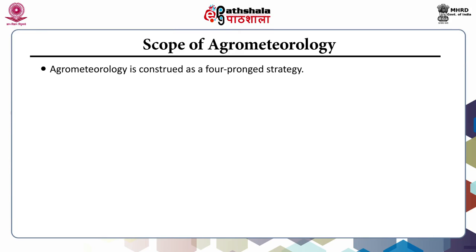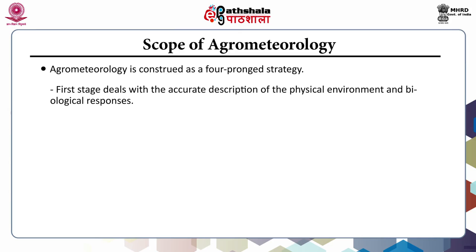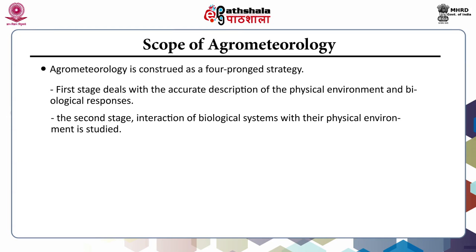Agrometeorology is construed as a four-pronged strategy. The first stage deals with accurate description of the physical environment and biological responses. In the second stage, the interaction of biological systems with their physical environment is studied.